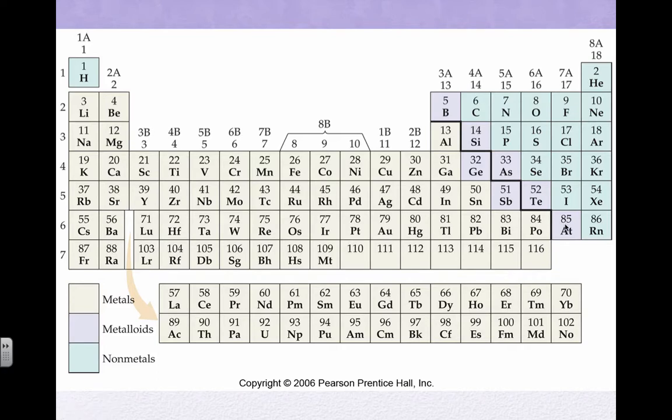Metals tend to be shiny or have luster. They can be ductile or malleable. They conduct electricity in the molten form or by themselves. They're good conductors of heat as well. The only nonmetal that's on the left-hand side is hydrogen.